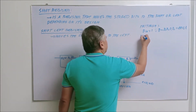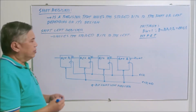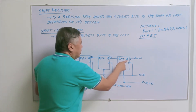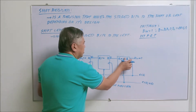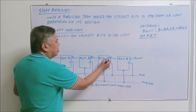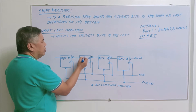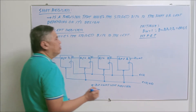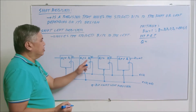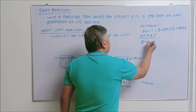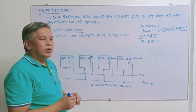On the first positive edge triggering of the clock, D sub zero will be stored into Q sub zero, so Q sub zero becomes one. The zero in D sub one will be stored into Q sub one, so you have zero. This one will be stored here, and this one here will be stored here. So your output Q during the first positive edge triggering of the clock will be zero zero zero one.